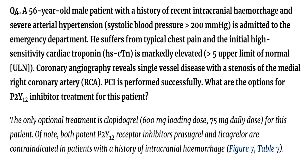Question 4. A 56-year-old male patient with a history of recent intracranial hemorrhage and severe arterial hypertension is admitted to the emergency department. He suffers from typical chest pain and the initial high-sensitivity cardiac troponin (hscTn) is markedly elevated — greater than 5 times the upper limit of normal (ULN). Coronary angiography reveals single-vessel disease with a stenosis of the medial right coronary artery (RCA). PCI is performed successfully. What are the options for P2Y12 inhibitor treatment for this patient?